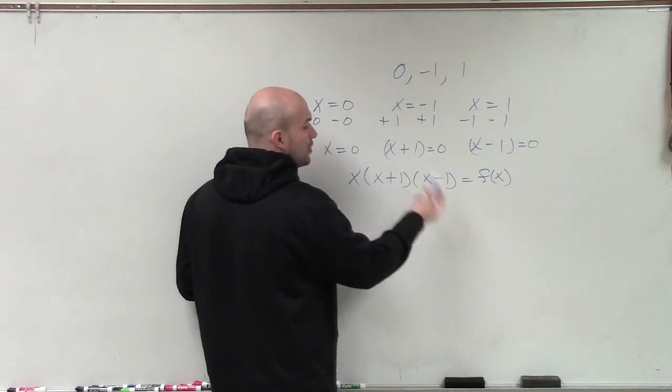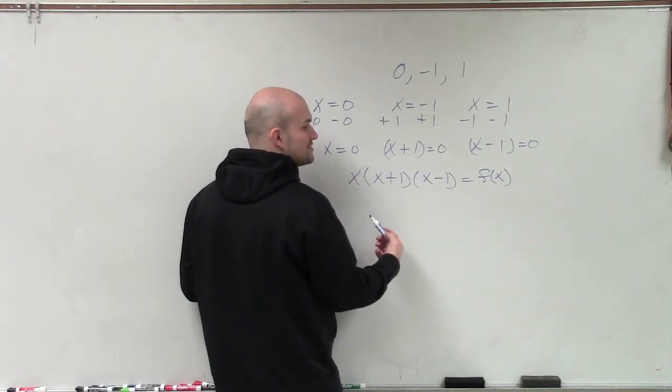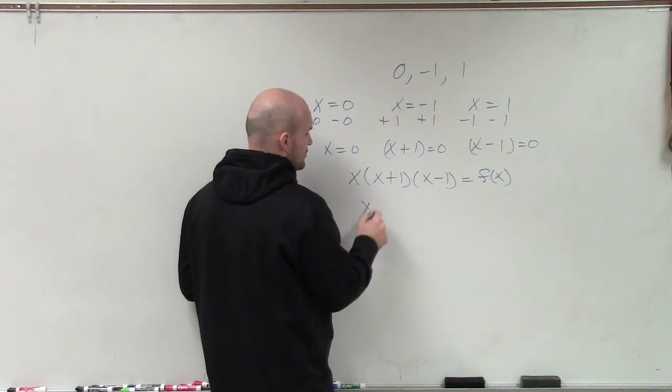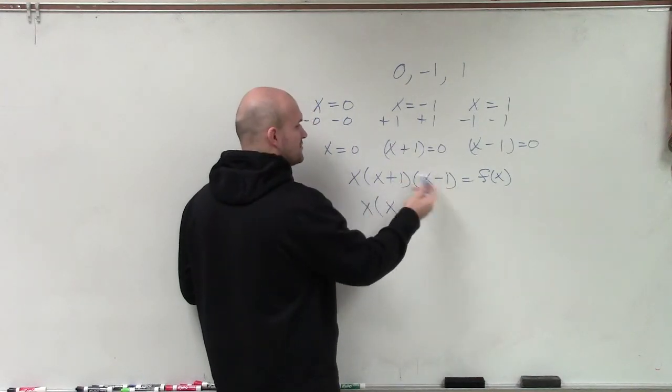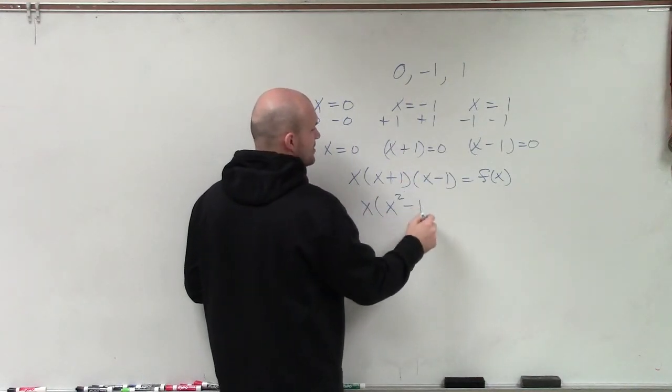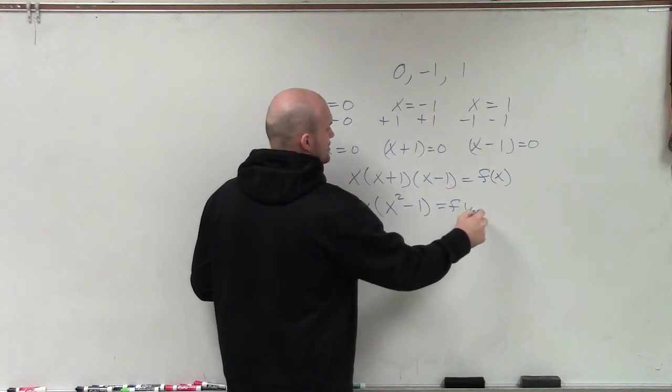So by multiplying these out, I notice that I don't need to FOIL everything. I can just FOIL the first and last two terms because, again, it's a difference of two squares. So therefore, by multiplying my first two terms and the last two terms, I get x squared minus 1 equals f of x.